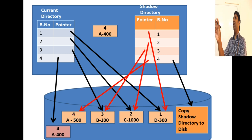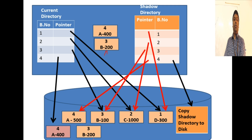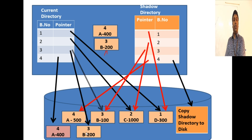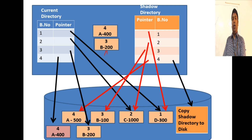The next step is to add 100 rupees to B. Block B is moved to main memory, and 100 is added making it 200 rupees. When it writes back, it does not write to the old page - it writes to a new unused location on the disk. The current directory pointer is then updated to point to this particular modified page.